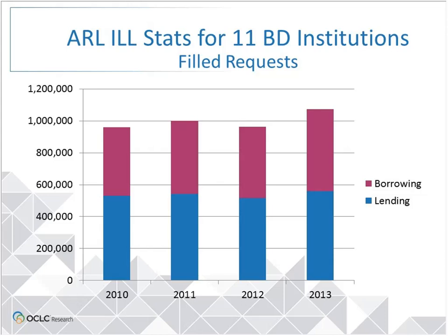The four years shown are the years where I knew I would have data from all the institutions. As a group, the BorrowDirect institutions lend a bit more than they borrow. When you add the data for all 11 institutions together, the total volume went up twice in three tries, with a slight dip in 2012. In 2013, for the first time, the group broke through the one million filled request barrier—that is, one million items borrowed and loaned total for all 11. So far, it would seem the answer to whether ILL volume is going up or down is a resounding 'going up.'